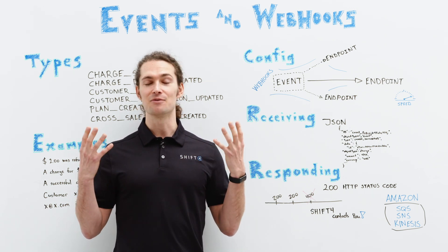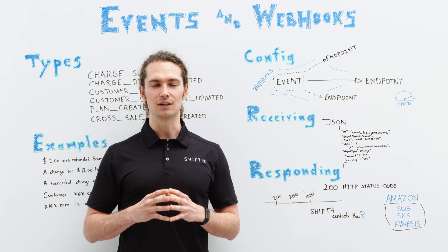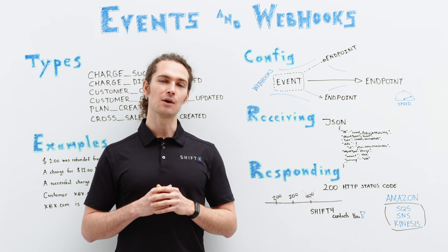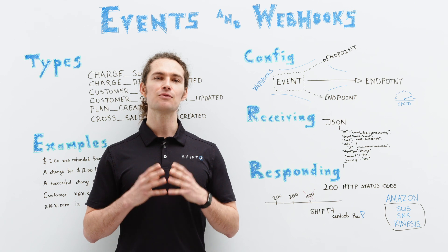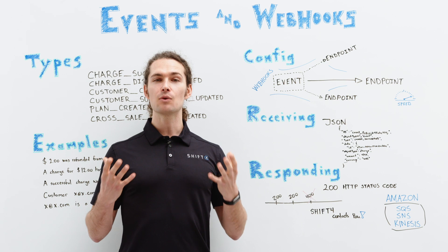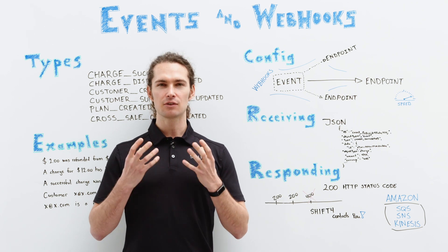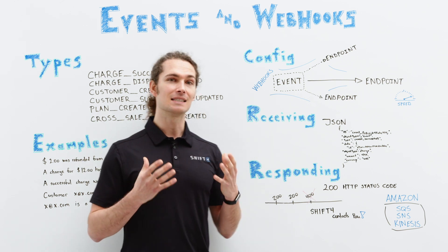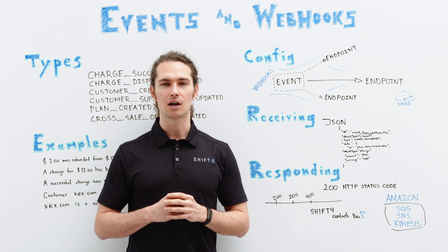All of this can happen very quickly. Shift4 is the market leader when it comes to processing and sending information about events via webhooks. On average, the information about events can be sent via our webhooks in under a second. When receiving webhook requests, each time an event is created, we send it to each configured, corresponding webhook URL. The event data is encoded as JSON, and in that form it's sent off to the merchant accordingly.